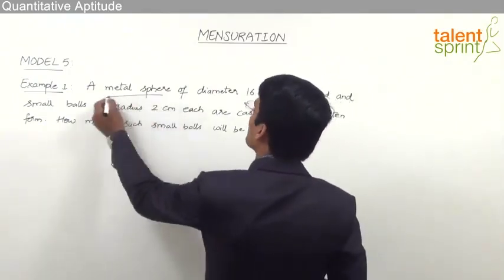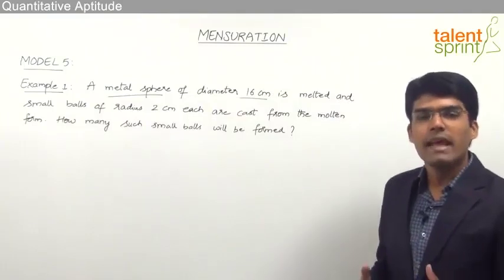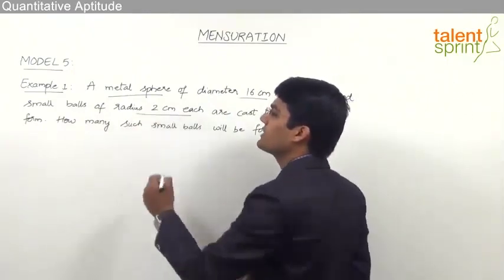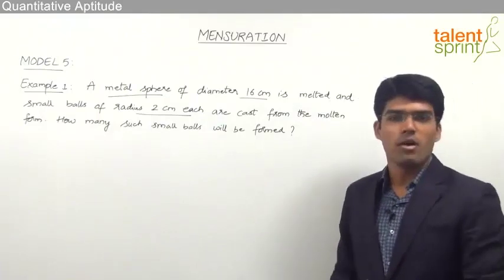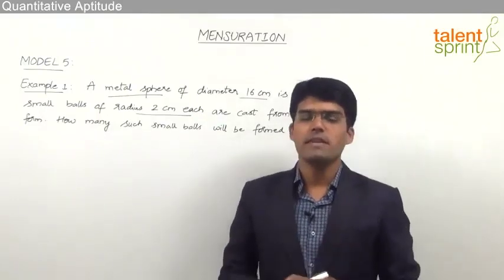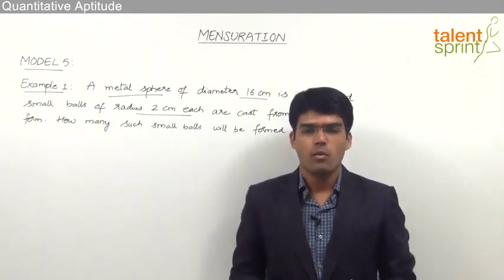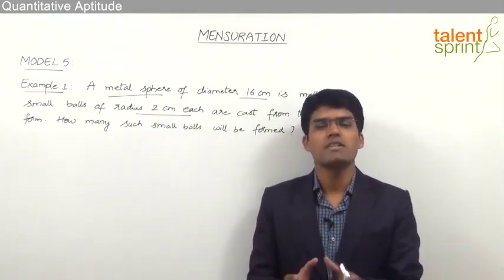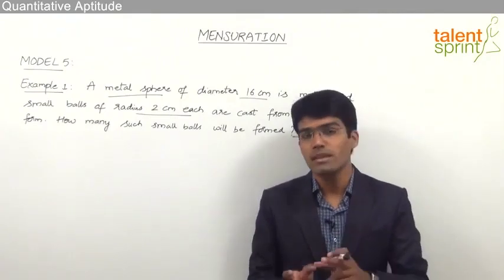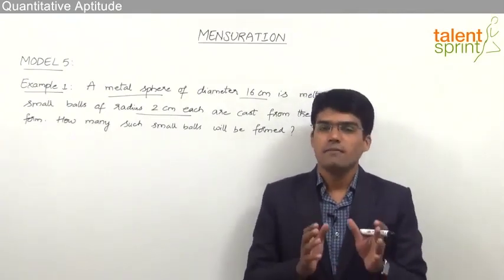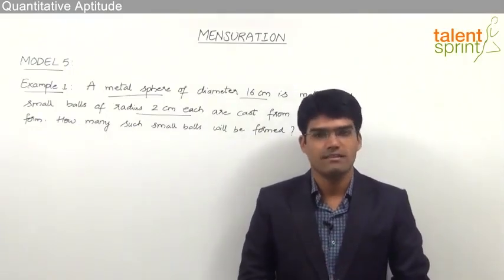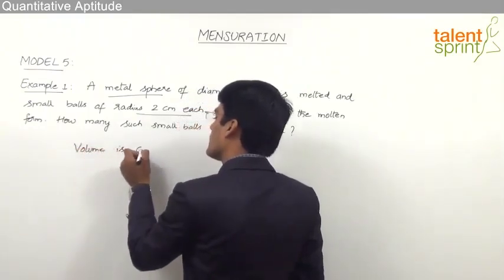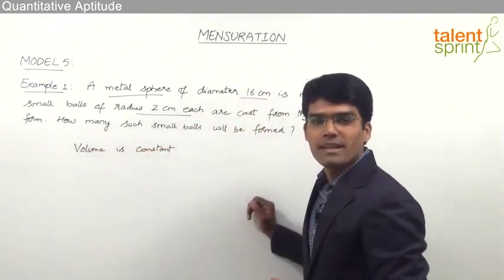As given, there is a metal sphere of diameter 16 centimeters. It is first melted and from the molten form we get small balls of radius 2 centimeters each. One important point to understand here is that whenever a solid is converted from one form to the other, its volume remains constant. That is, whenever one solid shape is converted to some other solid shape, various parameters may change but volume will always remain constant. Whenever conversion of solid takes place, volume is to be taken as constant.